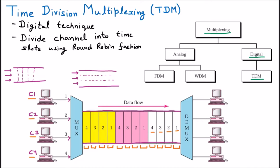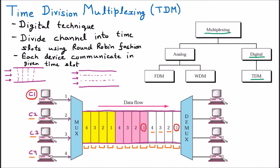Each device communicates in a given time slot only. If this is the chance of C1, then only C1 can transmit the data. C2, C3 and C4 are not going to send. This way the time slots are given. If C1 has to send data, he has to wait for his time slot. Similarly for 2, 3 and 4. This data will be sent and the demultiplexer is going to combine it back and divide it to the different systems. It is broadcasted afterward. This is time division multiplexing.